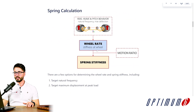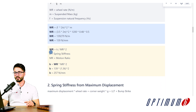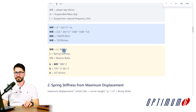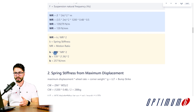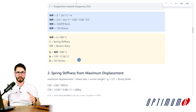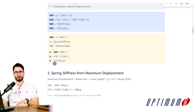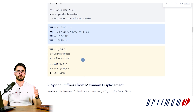Once we have the wheel rate defined, we see that we also need the motion ratio from previous episodes in order to calculate spring stiffness. We saw that the wheel rate is basically spring stiffness divided by motion ratio squared. If you rearrange this equation, we can calculate that the spring stiffness needed to achieve a wheel rate of 139 N/mm is 257 N/mm for the motion ratio we have.